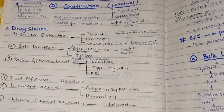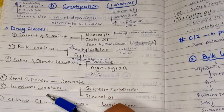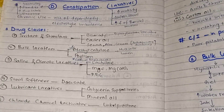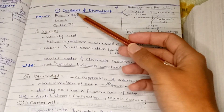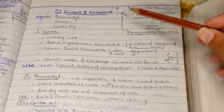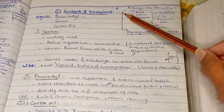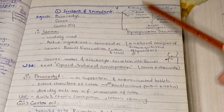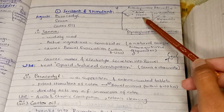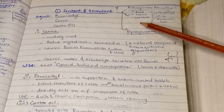The drug categories include irritants and stimulants, bulk laxatives, saline and osmotic laxatives, stool softeners, lubricant laxatives, and chloride channel activators. The first category is irritant and stimulants, which includes bisacodyl, senna, and castor oil. These are studied in two subcategories: anthraquinone derivatives, which includes aloe, senna, and cascara. Chronic use of these agents can cause melanosis coli and they can also be carcinogenic.